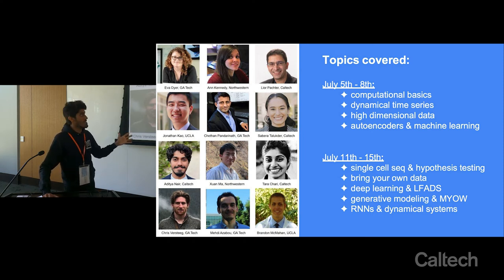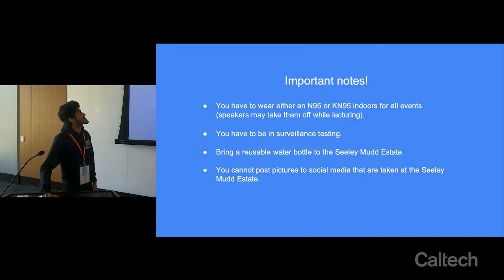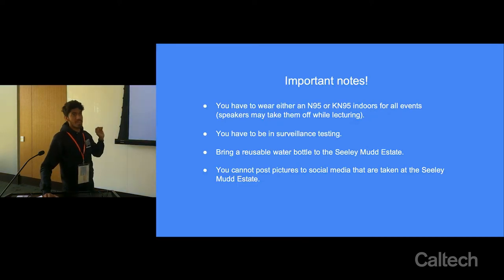Jonathan will walk you through a seminal neuroscience paper from Bill Newsome's lab where you train a recurrent neural network to do a task, then dissect that network and see how it actually functions. That's a broad overview of the different topics we'll be covering in our course.